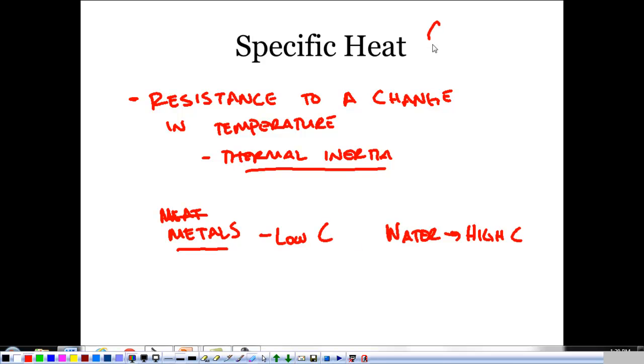We use a C to talk about specific heat. The way it works is if you put a little bit of heat into a metal, its temperature changes a lot. However, if you put a little bit of heat into water, its temperature doesn't change very much at all.